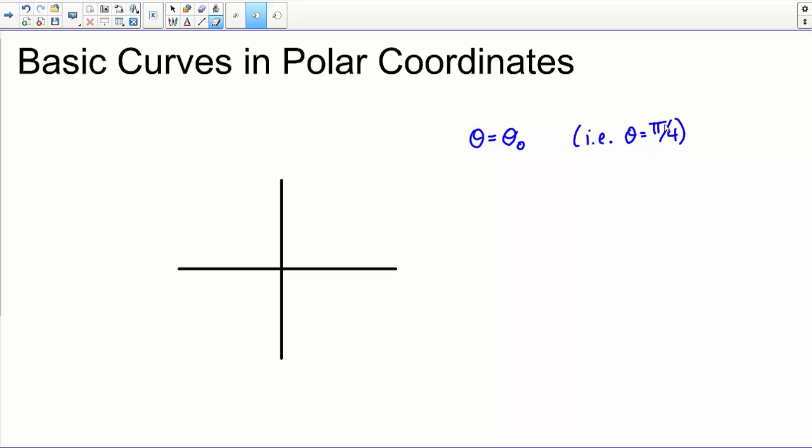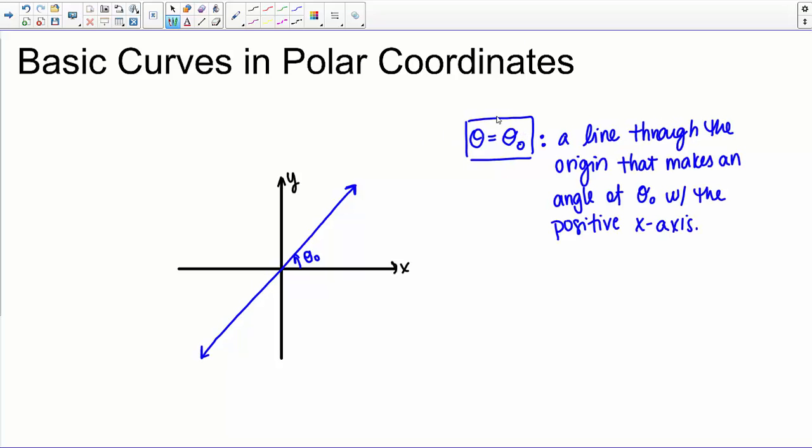Well this notation, if we consider the specific example theta equals pi over 4, means all the points that are an angle of pi over 4 from the polar axis. Now, since R is unspecified here, R could be either positive or negative, so then what we end up with is just a straight line that passes through the origin. So in general, the polar equation theta equals theta naught is a line through the origin that makes an angle of theta naught with a positive X axis.